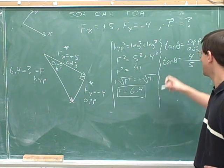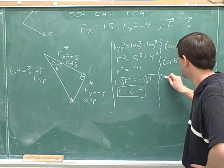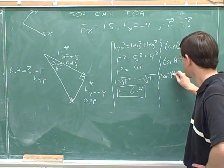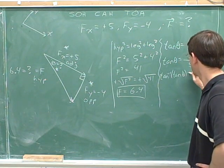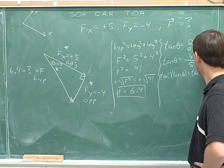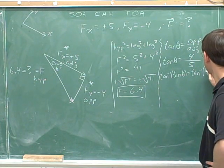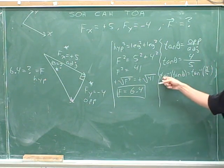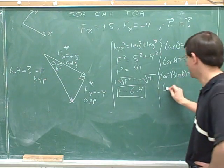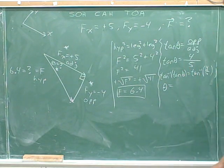We have to take the inverse tangent to get rid of the tangent function. Inverse tangent cancels out tangent, and all we have left is theta on the left, and we have to take the inverse tangent of 4 fifths, which is 39 degrees.